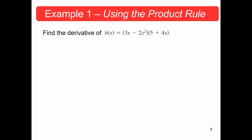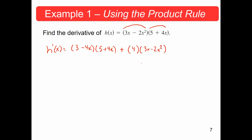Let's find the derivative in Example 1. We have two functions here. The derivative of h equals the derivative of the first — which is the sum (3x − 2x²) — so that's (3 − 4x), times the second (5 + 4x), plus the derivative of the second: the derivative of 5 is 0, the derivative of 4x is 4, so just 4, times the first function (3x − 2x²).